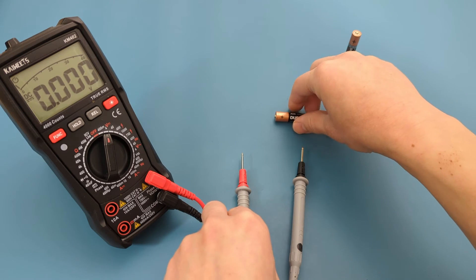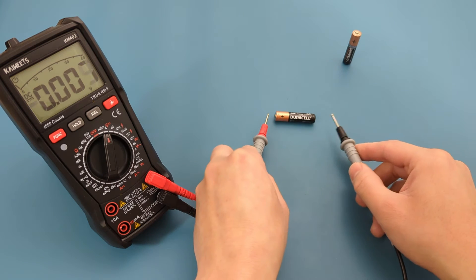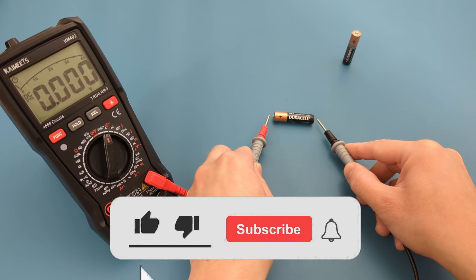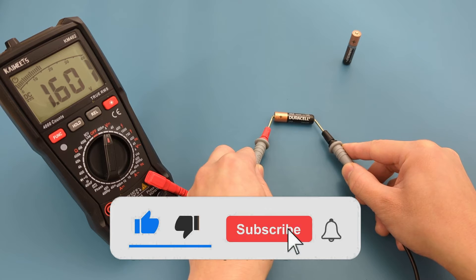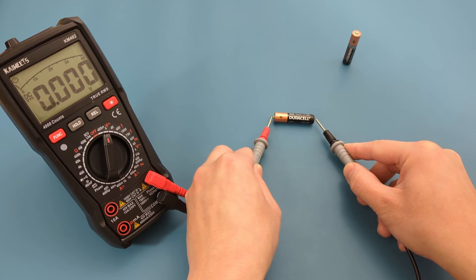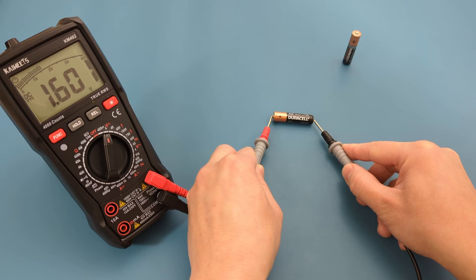Place the red probe lead on the battery's positive terminal and the black probe lead on the negative terminal. We're getting a reading of around 1.6 volts. This is a good battery.